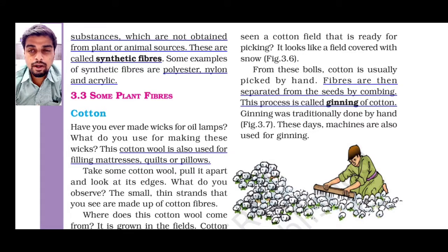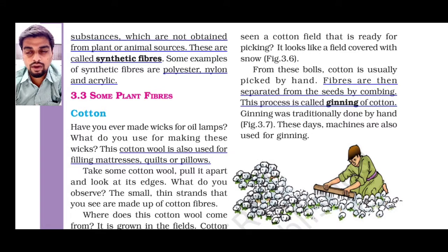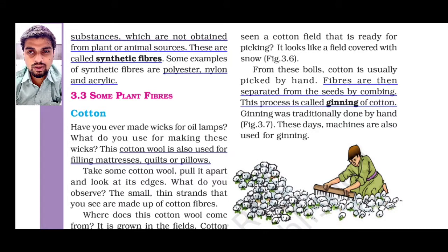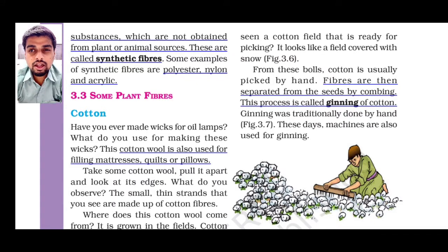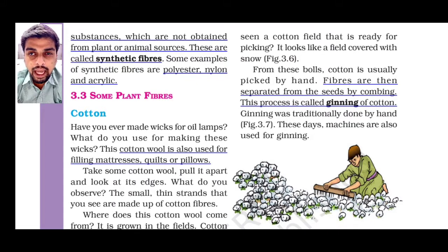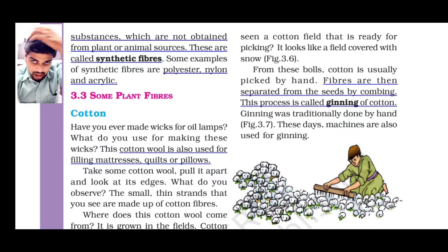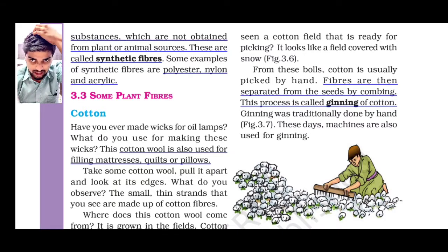The first process to make fiber to fabric is ginning. As you can see in figure 3.7, a man is using a comb — we use a small comb to comb our hair, but in figure 3.7 it is a large comb.